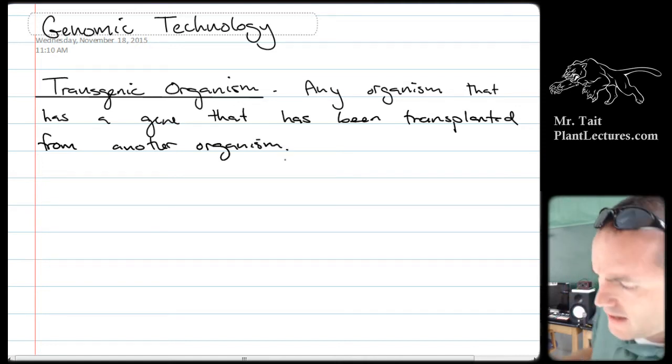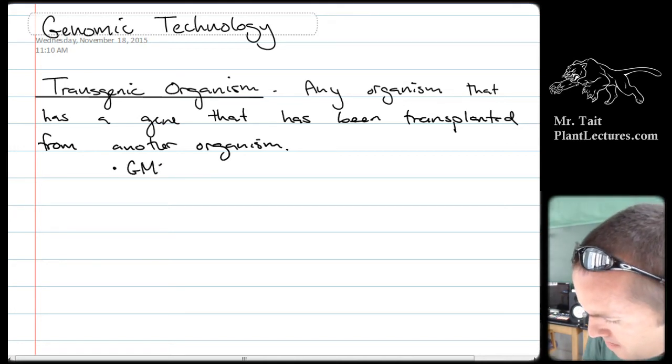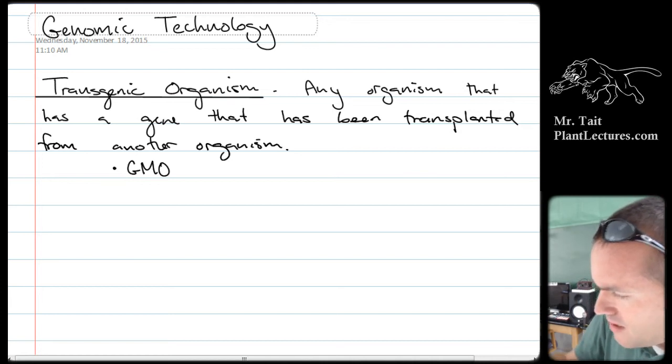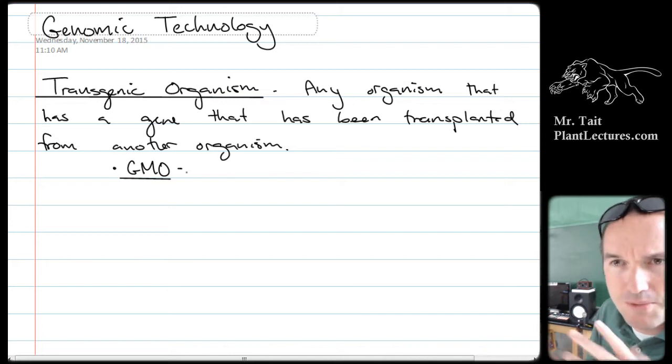A transgenic organism is any organism that has a gene in it that is from another organism - any organism that has a gene that has been transplanted from another organism. Not all transgenic organisms are necessarily considered GMOs.